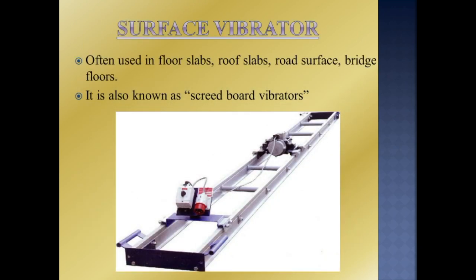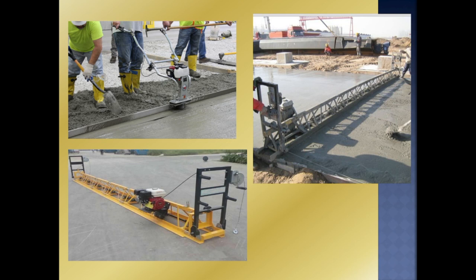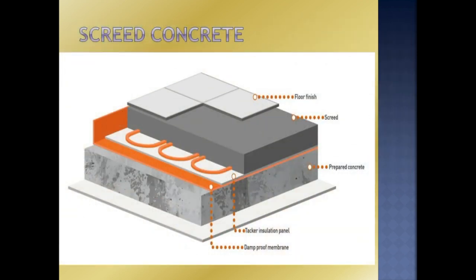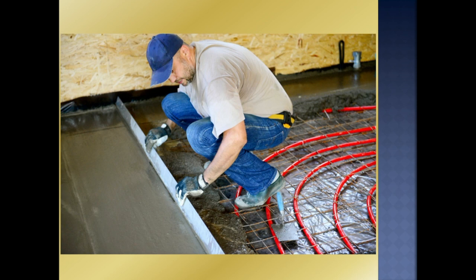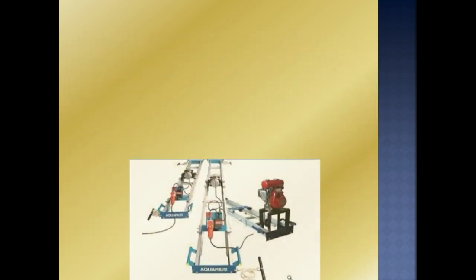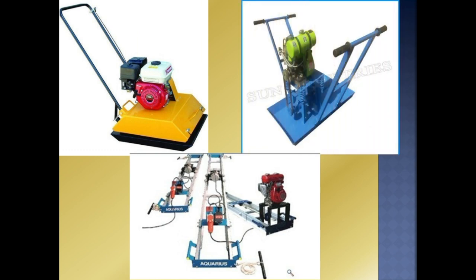Let's talk about the surface vibrator. The surface vibrator is used for roof slabs in concrete, bridges, and concrete floors. In commercial buildings, there are electrical pipelines in the floor where you can hide tiles. If you level using a screed vibrator, you can use the screed vibrator. There are different types of screed vibrators: double beam, screed board vibrators, mechanical screed vibrators, and truss-based screed vibrators.